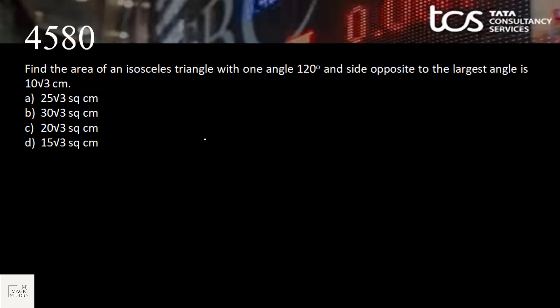Now we have an isosceles triangle. In an isosceles triangle, two sides are equal, so base angles are the same. One angle is 120°, and the side opposite to this largest angle is 10√3.